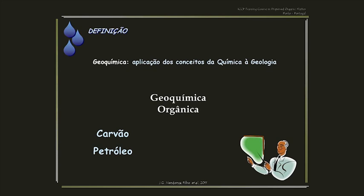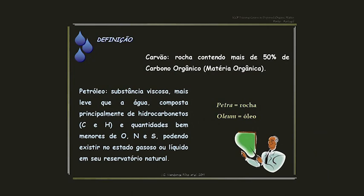Para nós, geoquímica é a aplicação de conceitos da química na geologia. Se é geoquímica orgânica, é a aplicação dos conceitos da química orgânica na geologia. Quando nós trabalhamos com orgânica, estamos falando de rochas orgânicas ou com conteúdo de matéria orgânica. Conceitualmente, nós só temos uma rocha que é orgânica, que é o carvão, que por definição tem que ter mais de 50% de matéria orgânica ou carbono orgânico. As outras rochas, quando têm conteúdo orgânico, como rochas geradoras de petróleo, chamamos de rocha com conteúdo orgânico.